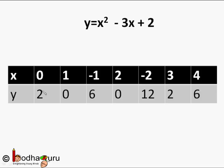When x = 0, the value of polynomial will be equal to 0² - 3(0) + 2 which is equal to 2. So x = 0, y = 2. Same way when x = 1, y = 0. Wow! We found the zero of a polynomial.